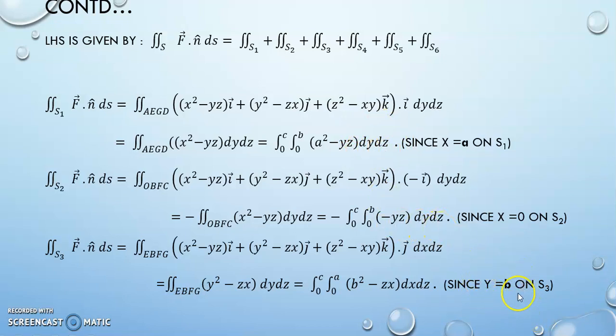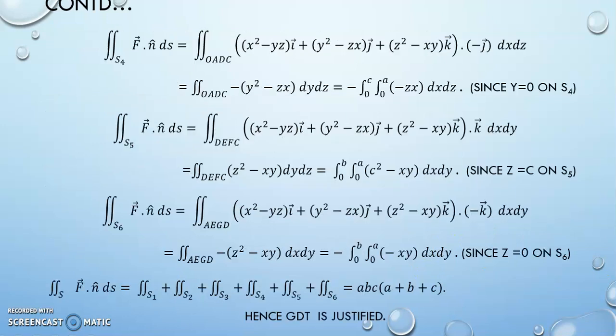So whenever you are considering y, it will be dx dz. And can you just have a guess for z? So whenever you are considering z, you will be having dx dy.